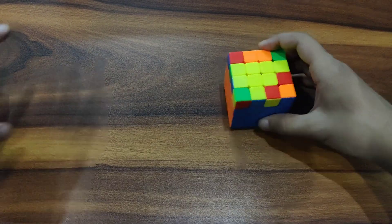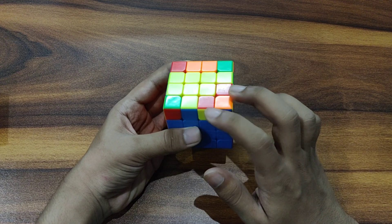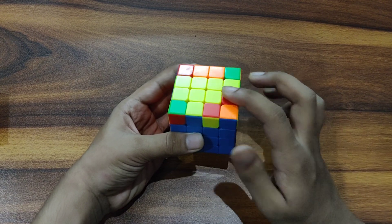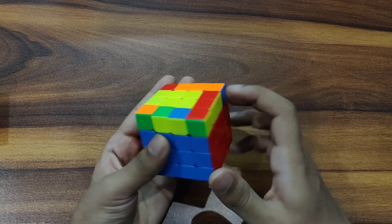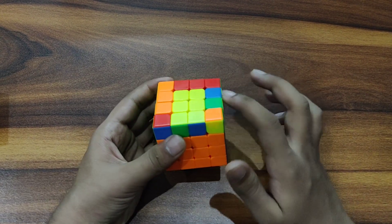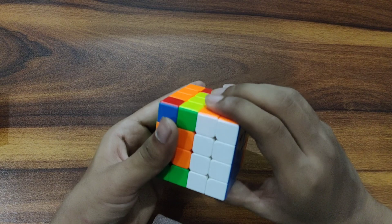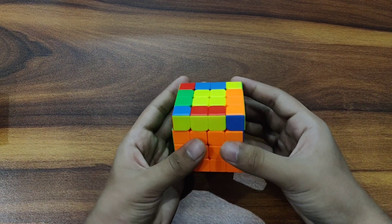So we are going to repeat this algorithm to solve this case. For example, we can solve this red edge by doing the same algorithm twice. Here, now we can solve this case by applying the algorithm once. All these are solved.